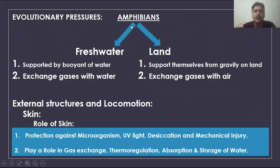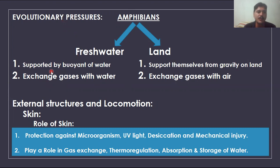What is the evolutionary pressure on amphibians? Amphibians occupy two different areas — aquatic and terrestrial. In fresh water, the body has buoyancy and gas exchange occurs in water. On the ground, the body must resist gravity via the vertebral column and gases are exchanged with air. So there is no big difference between fresh water and land in terms of what the body must do.